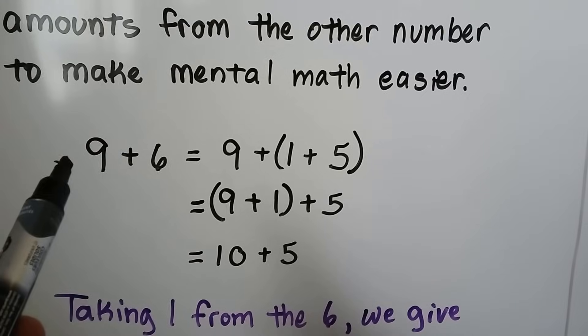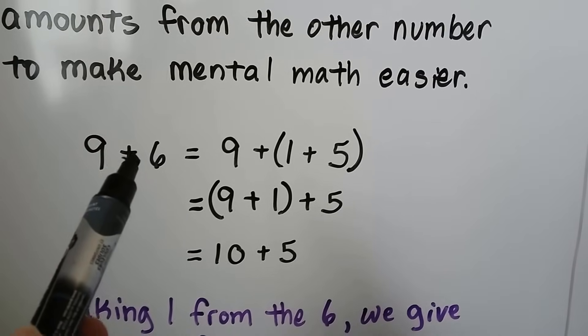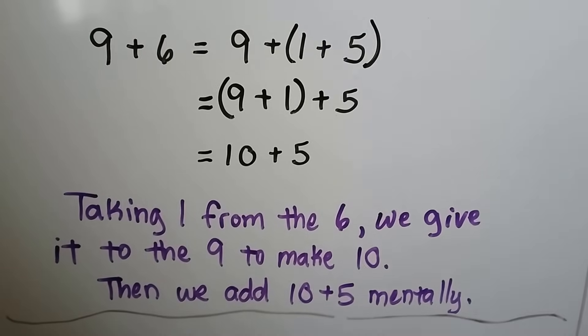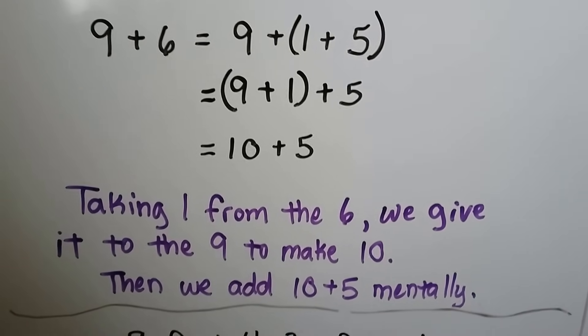We could do the same thing with 19 plus 16. We could make it 20 plus 15. Taking 1 from the 6, we give it to the 9 to make 10, then we add 10 plus 5 mentally.